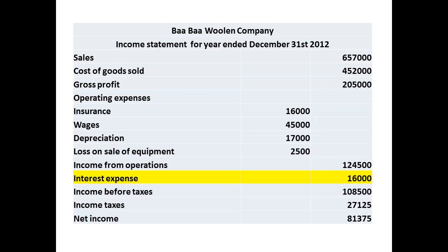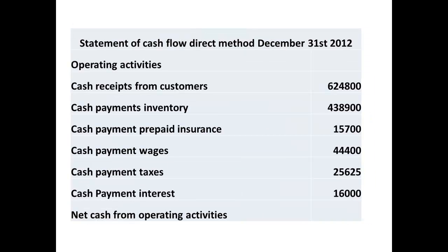To determine the cash payment for interest, we take the figure for interest expense from the income statement, giving a figure of $16,000. To obtain the net cash from operating activities, we take the cash receipts and subtract all of the cash payments, leaving a figure of $84,175.